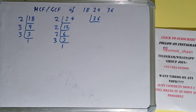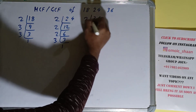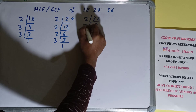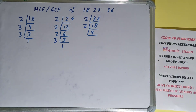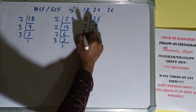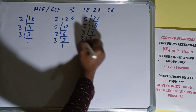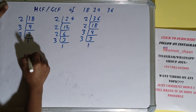Now we do the same with 36. Is 36 divisible by 2? Yes, giving us 18. Is 18 divisible by 2? Yes, giving us 9. Is 9 divisible by 2? No, so we check with the next lowest prime, 3. Is 9 divisible by 3? Yes, giving us 3. And 3 is again divisible by 3, giving us 1. We're done with the prime factorization step.